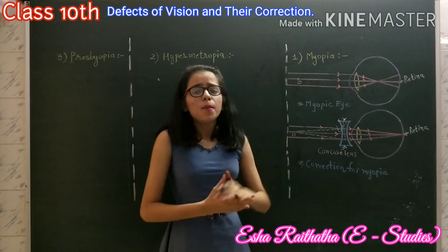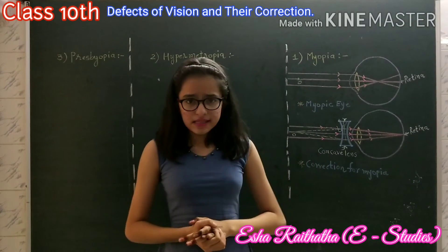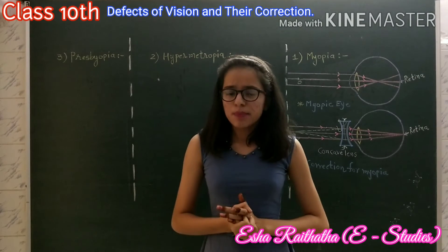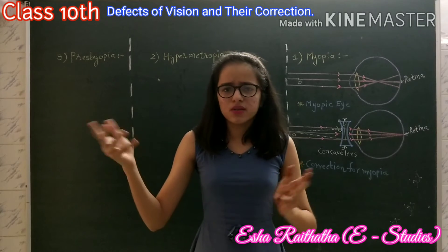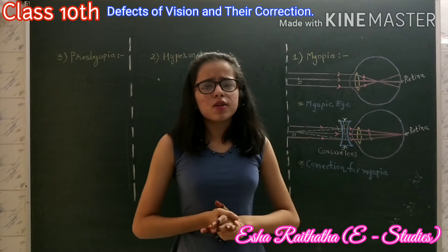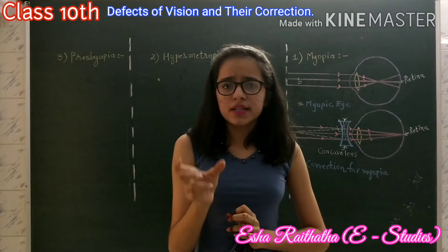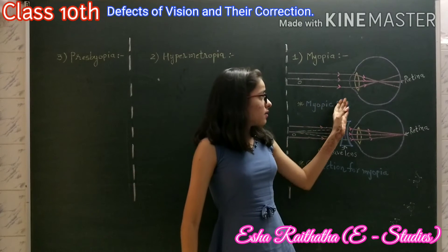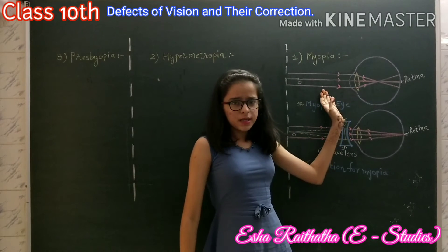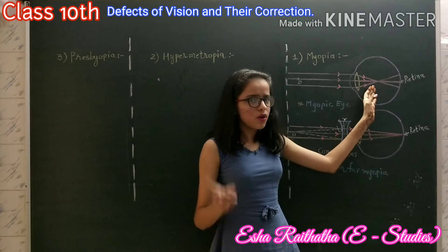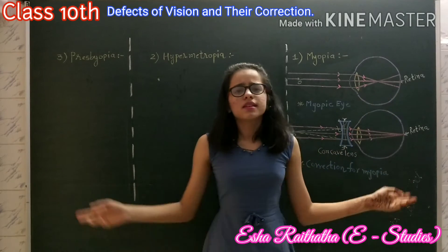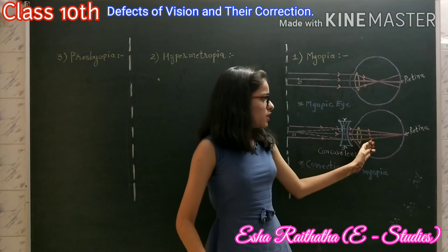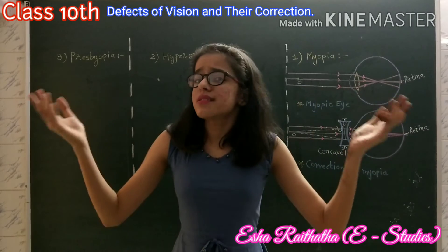First, myopia, also known as nearsightedness. A person suffering from it can see nearby objects clearly but cannot see distant objects clearly. A person suffering from myopia has a far point nearer than infinity. In a myopic eye, the image of a distant object falls in front of the retina, not on the retina itself. This is corrected by a concave lens of suitable power, which brings the image back onto the retina and thus the defect is corrected.